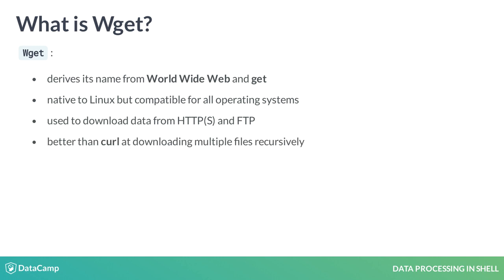Compared to curl, wget is more multipurpose. It can download a single file, an entire folder, or even a webpage. Most importantly, it makes multiple file downloads possible recursively.